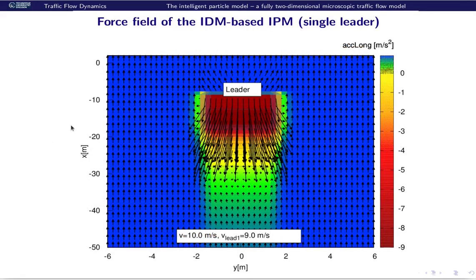How does the force field of the intelligent particle model look like? First, we have a simple case, a simple leader. All these arrows denote the vectorial forces a follower with a certain speed of 10 meters per second would have at any possible position laterally or longitudinally behind or before the leader.